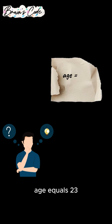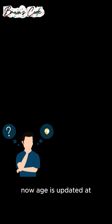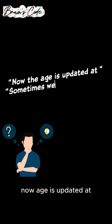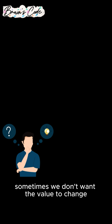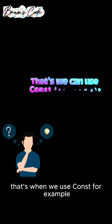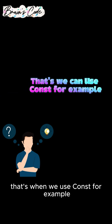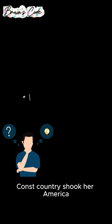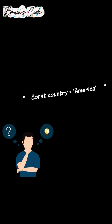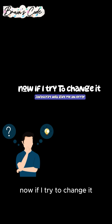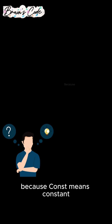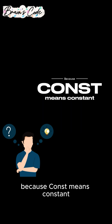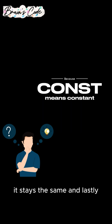age = 23. Now age is updated. And sometimes we don't want the value to change — that's when we use const. For example, const country = 'America'. Now if I try to change it, JavaScript will give me an error, because const means constant. It stays the same.